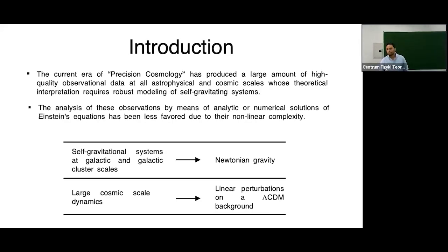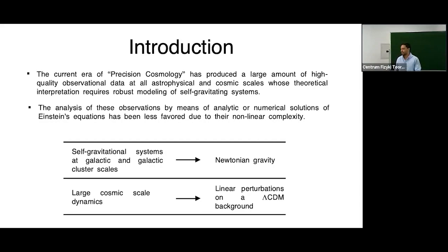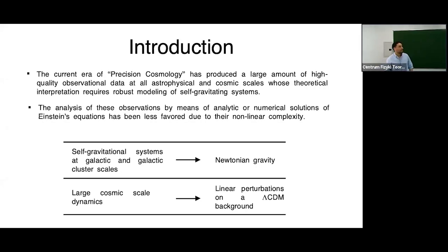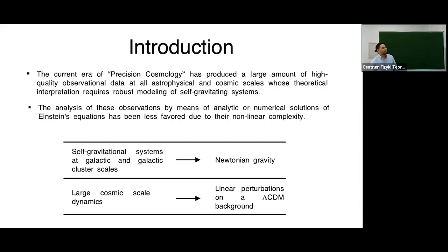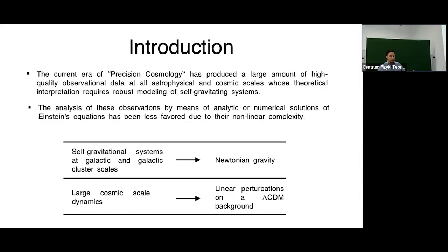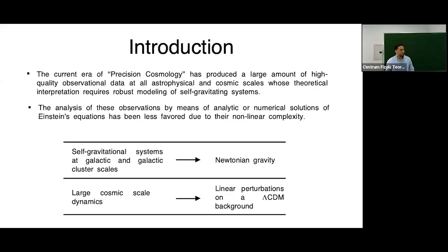Our main motivation comes from observations: observations are becoming more precise every day, covering different astrophysical and cosmological scales. Modeling these observations requires a rich theoretical framework. Depending on the scale, we use different approaches — at a few megaparsecs we use Newtonian N-body simulations, which give a really good description of structure formation. At very large scales, around 100 megaparsecs, we assume the universe is isotropic and homogeneous, described by the FLRW metric.